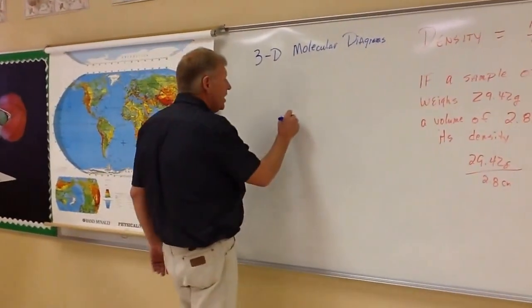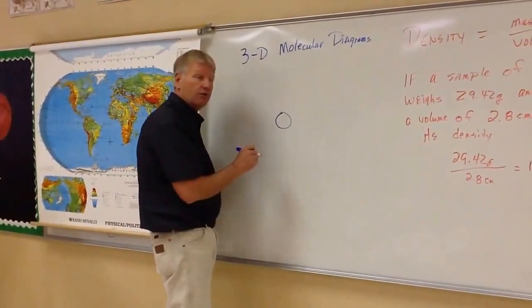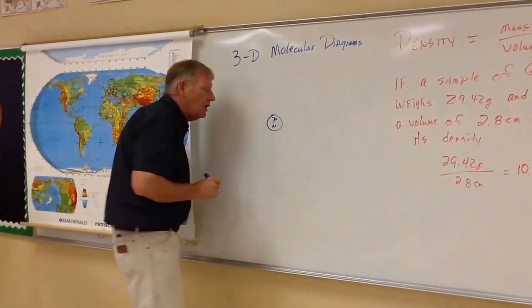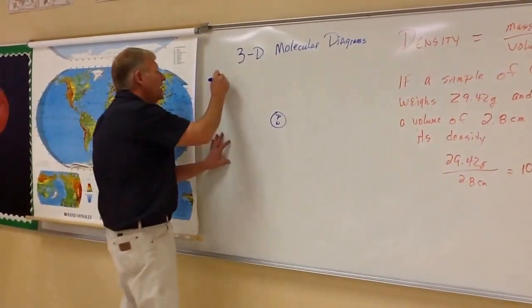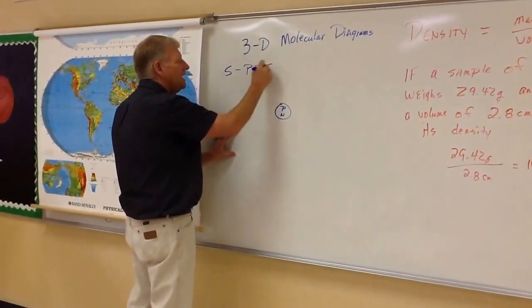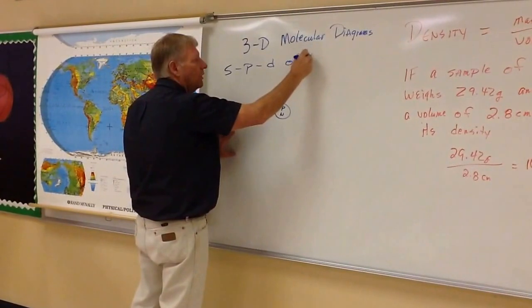So basically, what we have is we have a nucleus. The nucleus still has the protons, still has the neutrons. But we have different electron orbitals. We have an S, a P, and a D orbital.